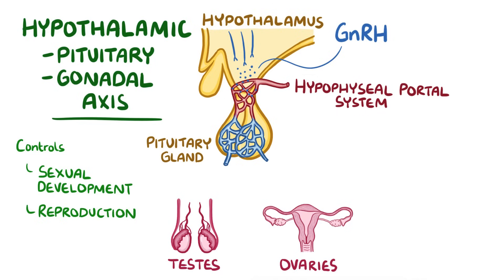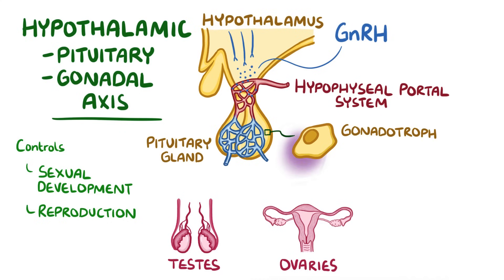When gonadotropin-releasing hormone reaches the pituitary gland, it stimulates cells in the anterior pituitary called gonadotrophs to release gonadotropin hormones — luteinising hormone and follicle-stimulating hormone — into the blood. These gonadotropin hormones then stimulate the gonads to produce sex-specific hormones.